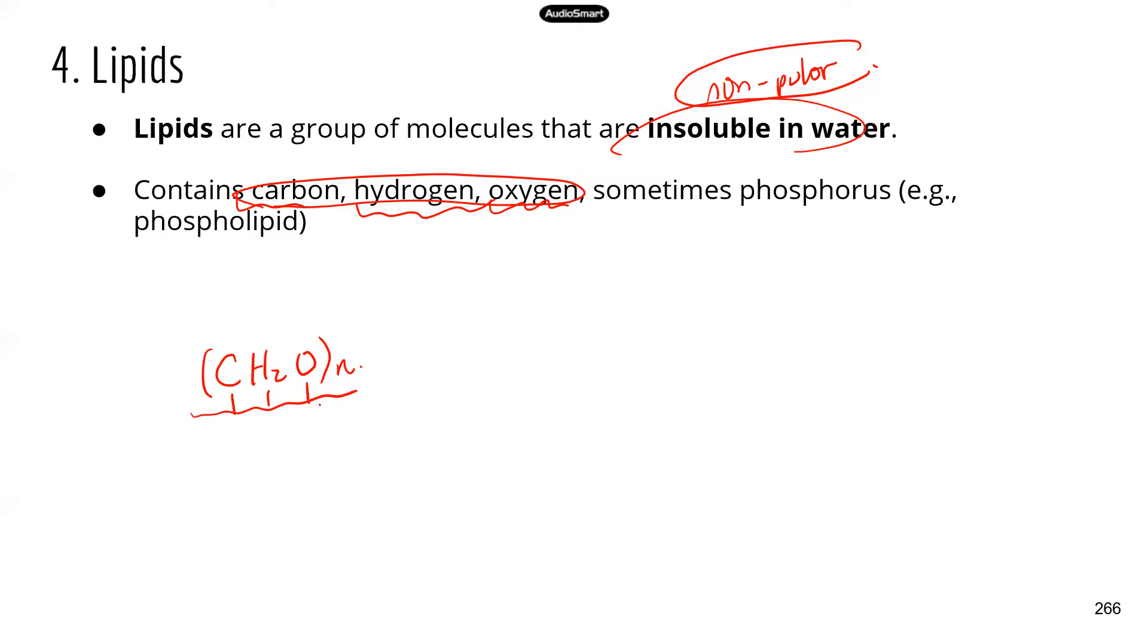For lipids, those three elements are common. Sometimes lipids may also have phosphorus. And that's when we look at phospholipid, which is a very important component for cell membrane.